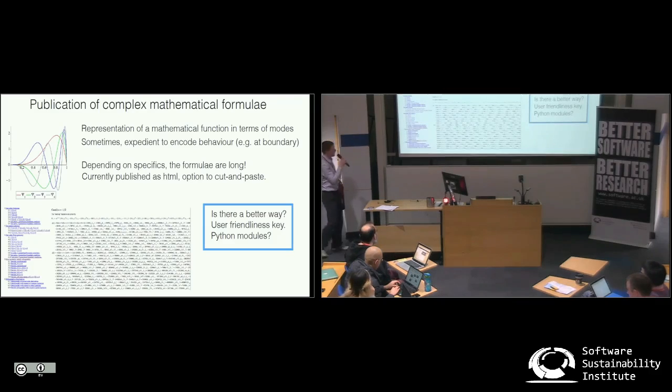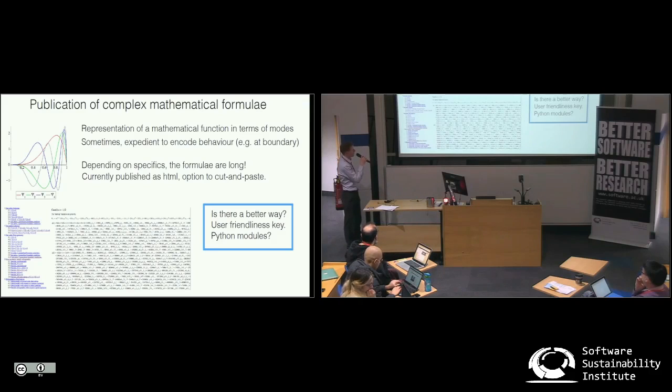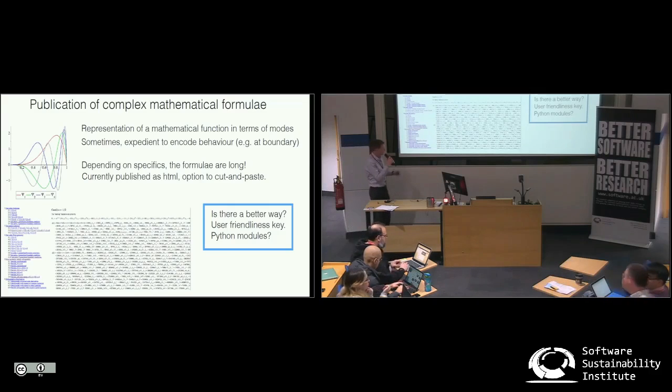One of the things that I've developed is an optimal way of representing functions in Applied Mathematics problems. You may have come across things like Fourier functions, but sometimes it's useful to encode other things about the problem, for example, how the function behaves at the boundary. And it turns out that there's an optimal way of doing this.